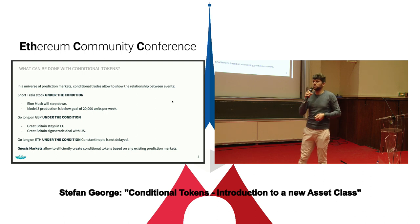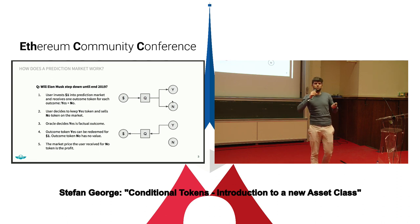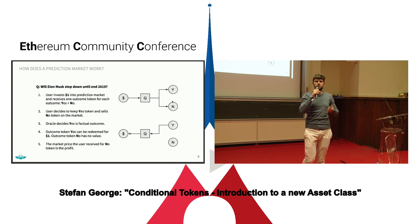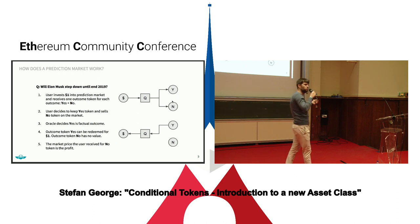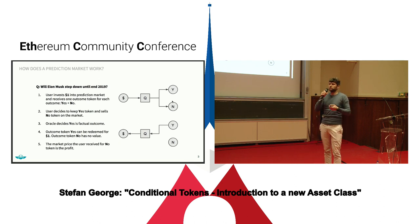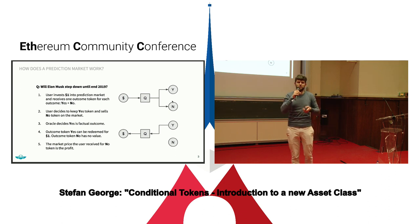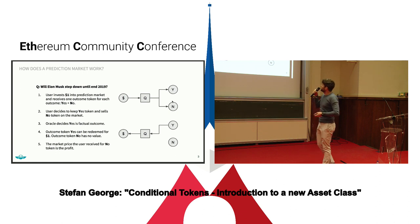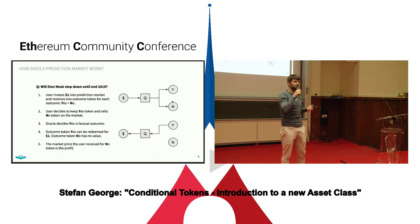So how can those be created within smart contracts? Let's first recap how prediction markets work before we talk about conditional prediction markets. A prediction market is actually quite simple. Let's go back to this example: will Elon Musk step down at the end of 2019? What you essentially do is you have a smart contract, you send in one DAI, and the smart contract will issue you one ERC-20 token for each possible outcome — in this case yes or no. You keep the token that you believe represents the factual outcome. Let's say you believe yes, Elon Musk will step down — then you keep the yes token and you sell the no token on the market.